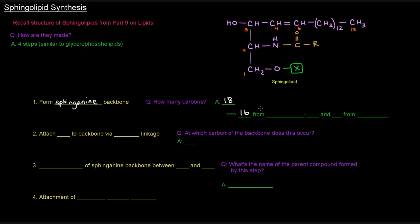16 of those carbons come from palmitoyl-CoA, which is an activated fatty acyl-CoA, and two of them come from the amino acid serine, which actually has three carbons, so we'll have to pay attention to where that third carbon actually goes. The second thing that needs to happen is that we need to attach a fatty acyl-CoA as an acyl group to the backbone via an amide linkage. At which carbon of the backbone does this occur? That occurs at carbon number two, C2.